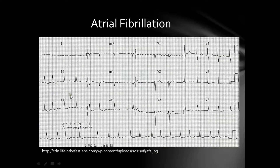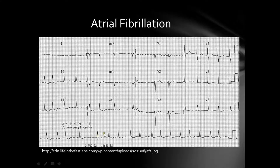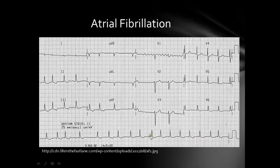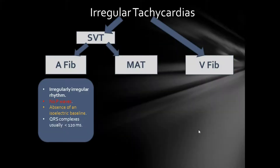Here on this ECG, we can see a typical atrial fibrillation. First, the rhythm is irregularly irregular because the R-R intervals are changeable with each beat. The second thing is that you have a narrow complex tachycardia because of the narrow QRS complexes. And the third thing is you do not have distinct P waves, but simply a fibrillatory baseline.